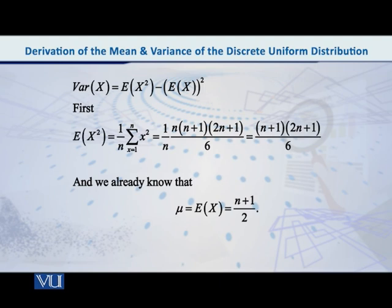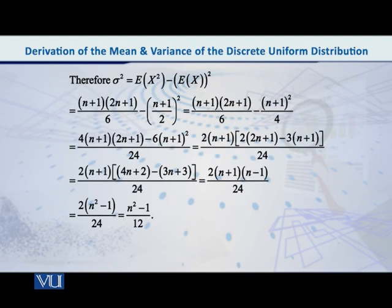So as you can now see on the screen, the variance, which is also known as sigma square, denoted by sigma square, is equal to E of x square minus E of x whole square, that is n plus 1 into 2n plus 1 over 6 minus n plus 1 over 2 whole square.